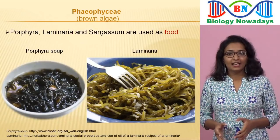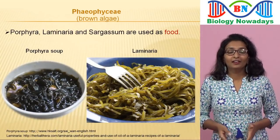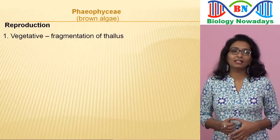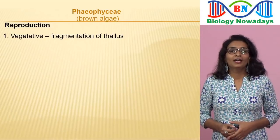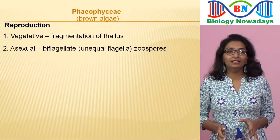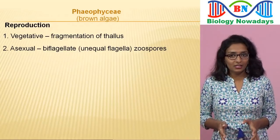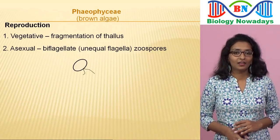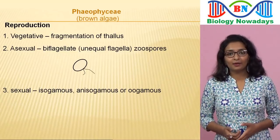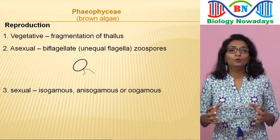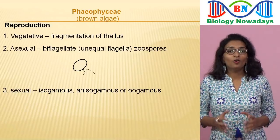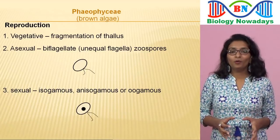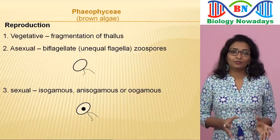Algae like Porphyra, Laminaria and Sargassum are also used as food. Vegetative reproduction in Phaeophyceae takes place by fragmentation of the thallus. Asexual reproduction in most brown algae is by biflagellate zoospores that are pear-shaped and have two unequal laterally attached flagella. Sexual reproduction may be isogamous, anisogamous or oogamous. Union of gametes may take place in water or within the oogonium in the case of oogamous species. The gametes are pyriform or pear-shaped and have two laterally attached flagella.